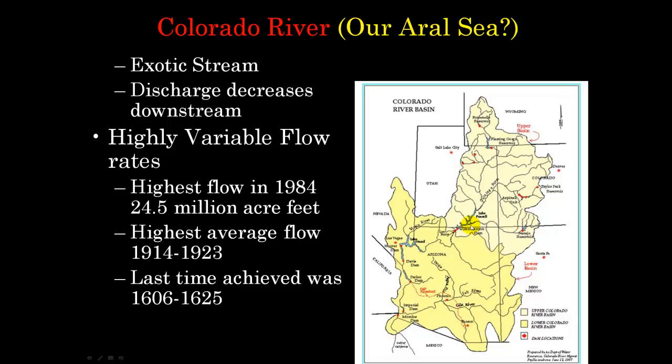Other well-known exotic streams include the Nile River — these rivers flow through arid landscapes but their headwaters are in areas with much higher precipitation. In an exotic stream, discharge decreases going downstream as you lose water to evaporation. The Colorado River, like many exotic streams, has a highly variable flow rate. A lot of the flow rate depends on how much snowpack you get in the winter.